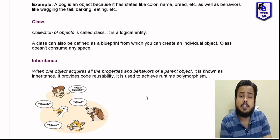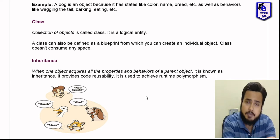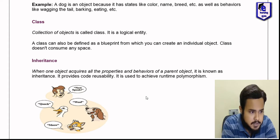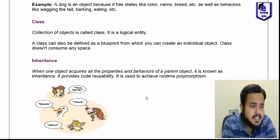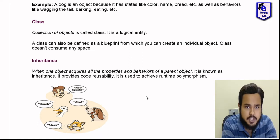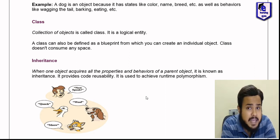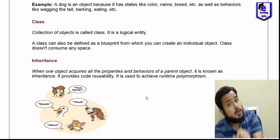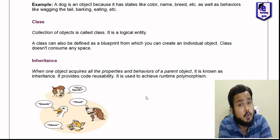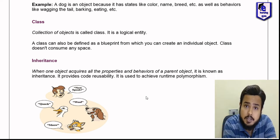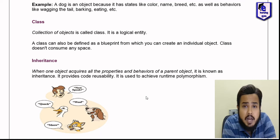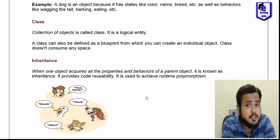Collection of objects is called class. It is a logical entity. A class can also be defined as a blueprint from which you can create an individual object. Class does not consume any space, but when you have an object, the memory space will be allocated.